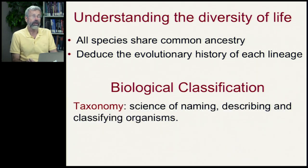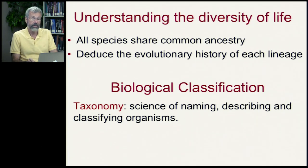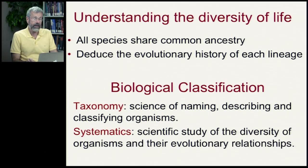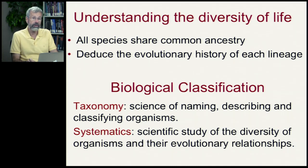There are several different terms involved with this process. The first is taxonomy, which is the science of naming, describing, and classifying different organisms. Secondly, we often refer to this as systematics — the scientific study of the diversity of organisms and their evolutionary relationships.